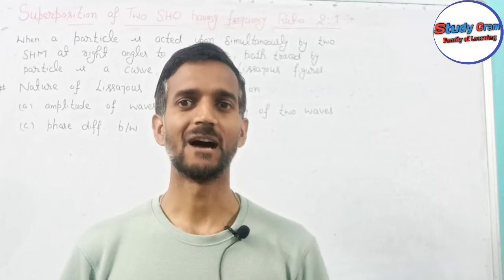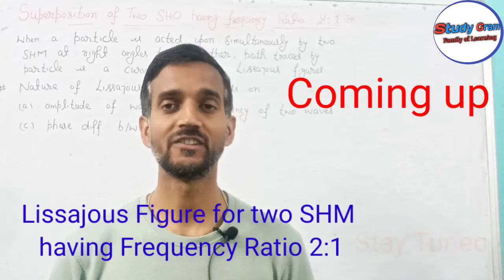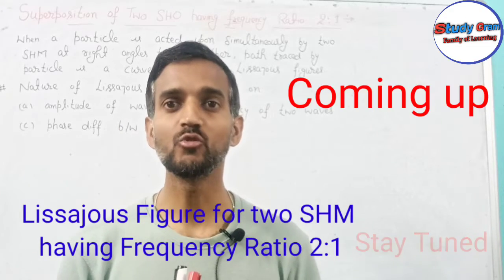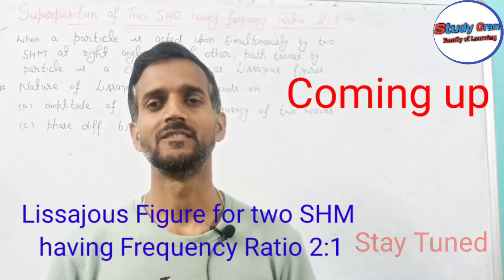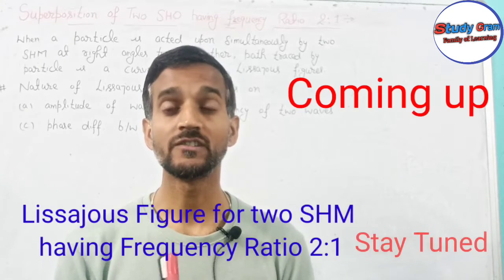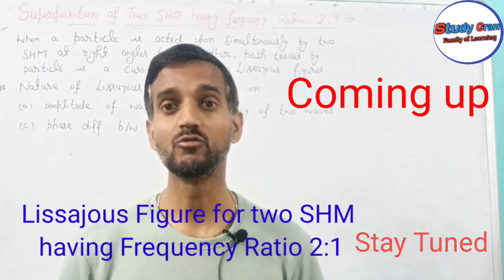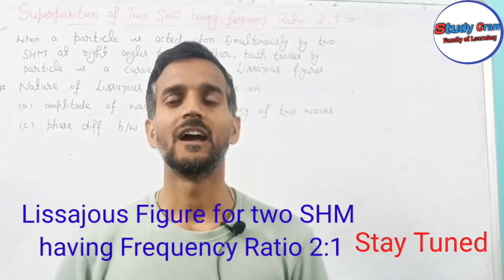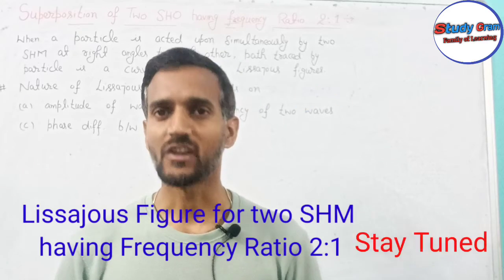Hello students, welcome to the channel. After a huge demand on the topic of Lissajous figures, I'm making this video for you. First of all, we have to understand what Lissajous figures are. When a particle is acted upon by two simultaneous simple harmonic motions, that particle traces a path. The condition is that those two simple harmonic motions should be perpendicular to each other. The path traced by that particle is called a Lissajous figure. These figures can be of any shape — it can be an ellipse, a circle, or a straight line.